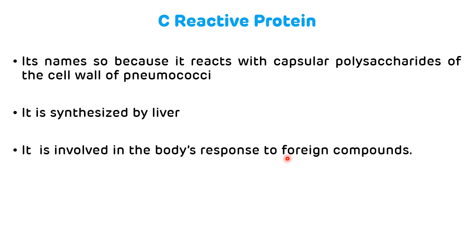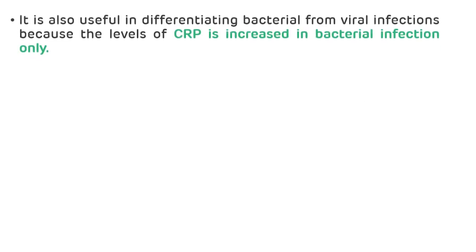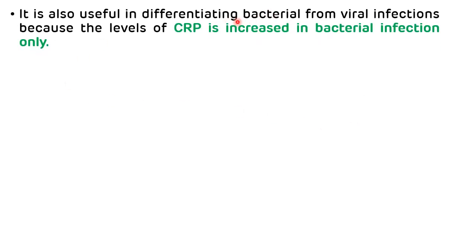Its concentration will be increased whenever there is inflammation or infection. This C-reactive protein is a very important test to differentiate bacterial infection from viral infection because the level of CRP will be increased only in bacterial infection. One variant of C-reactive protein is high-sensitive C-reactive protein, which is also used as a risk factor for cardiovascular diseases.